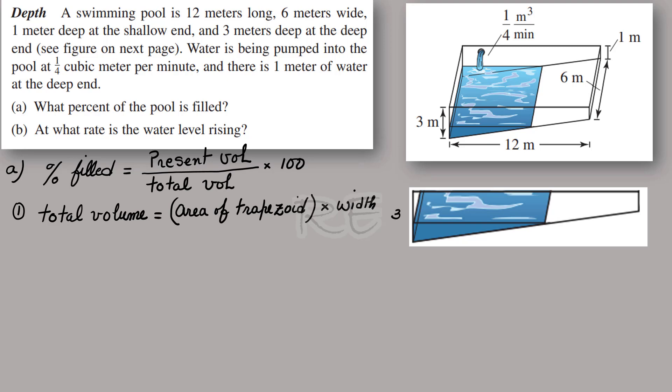Looking closer: 3 meters is the base, the height will be 12, and the second base will be 1. So the area of the trapezoid is one-half the average of the bases, 3 plus 1, multiplied by the height, which is 12.